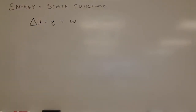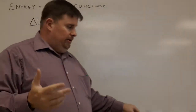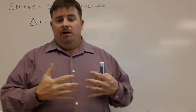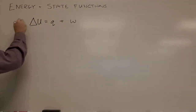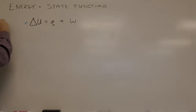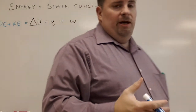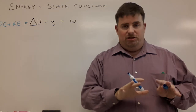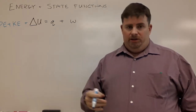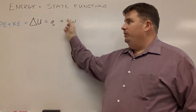Internal energy is equal to the sum of potential and kinetic energy in the system. In chemistry we assign specific variables: delta U = q + w, where q is heat and w is work.